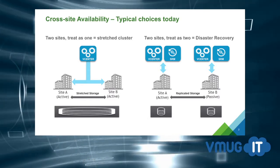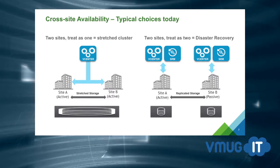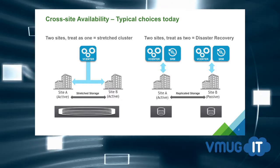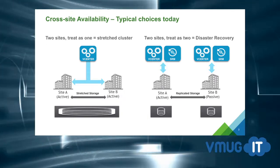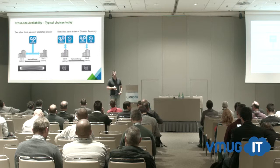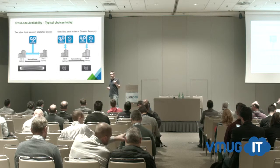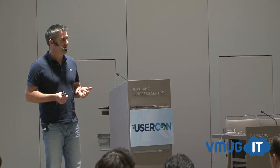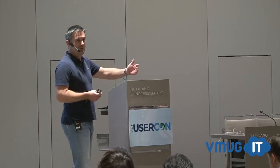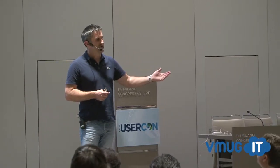Let's start with what we've got today in terms of options for two-site solutions. This has been relatively static for a number of years. The choices customers make when looking at a multi-site option are dictated by a number of things — primarily budget. Everybody wants a zero RPO, zero RTO solution when they start out, but not everybody can see that through to the end once they get prices and quotes back.